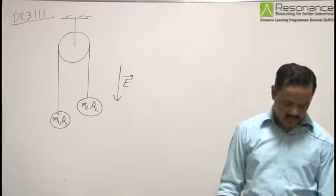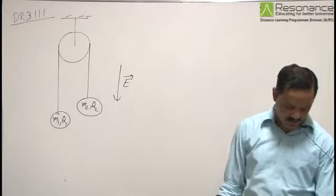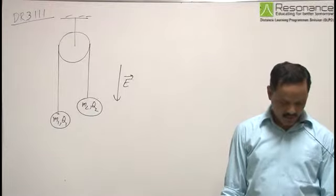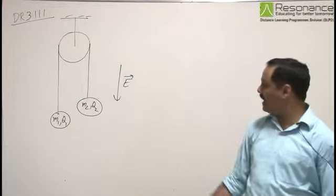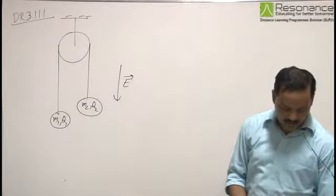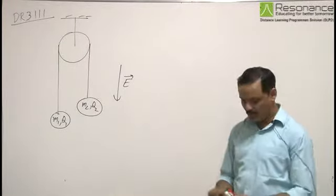We need to calculate the acceleration of the balls and tension in the string if the whole assembly is located in a uniform electric field E which is acting vertically downwards, and we need to neglect any interaction between the balls.